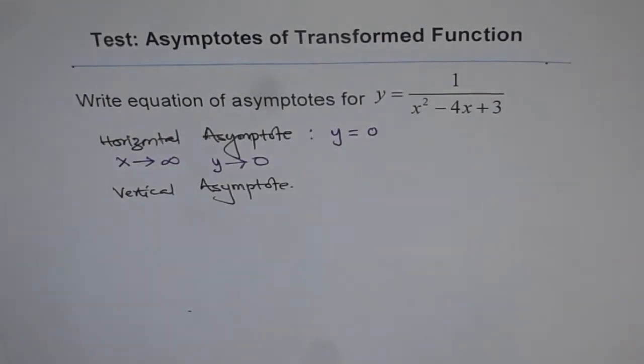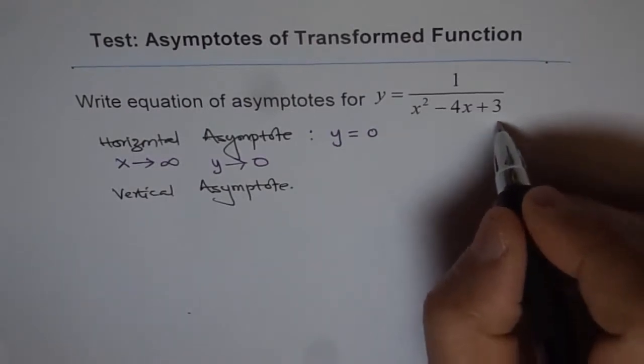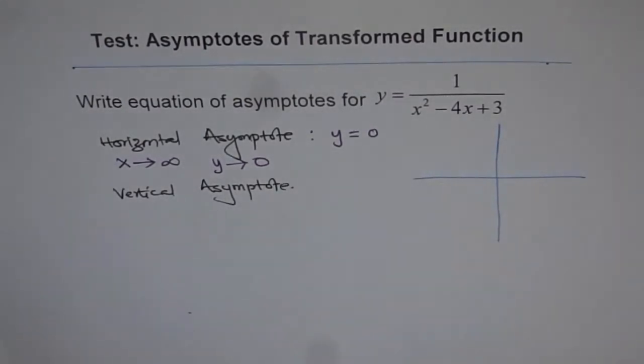In a nutshell, a horizontal asymptote is a value the function tries to approach but never reaches. This is what it is.